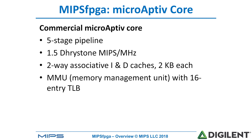The microAptiv core is a five-stage pipeline. It operates at 1.5 Dhrystone MIPS per megahertz. It has two-way associative instruction and data caches, two kilobytes each, and a memory management unit — an MMU — and a 16-entry translation look-aside buffer, TLB.